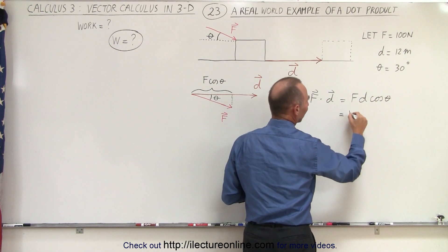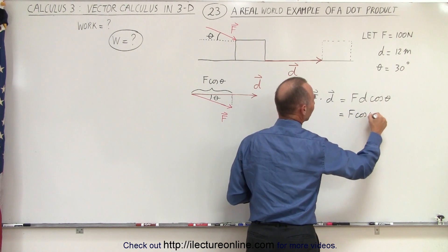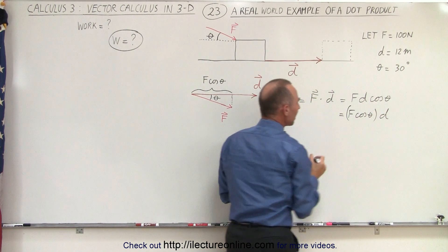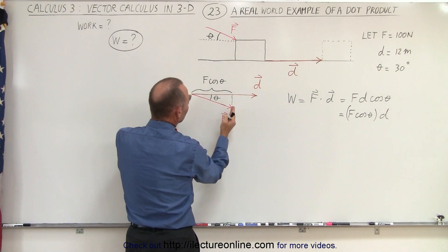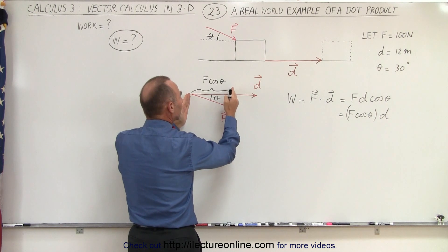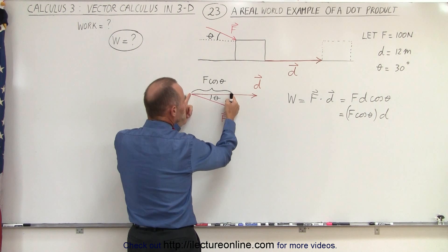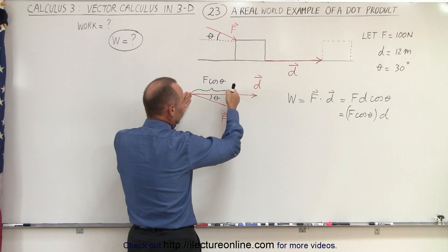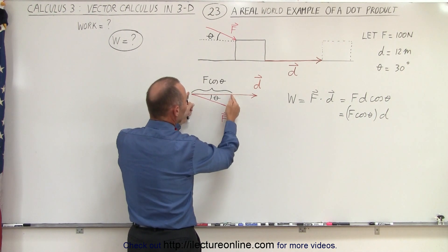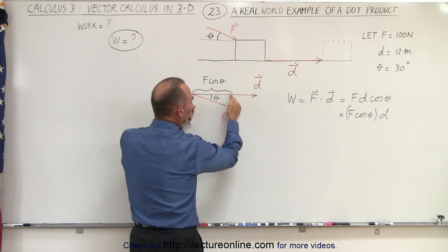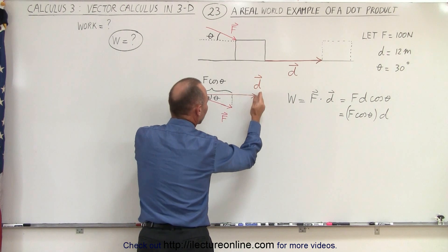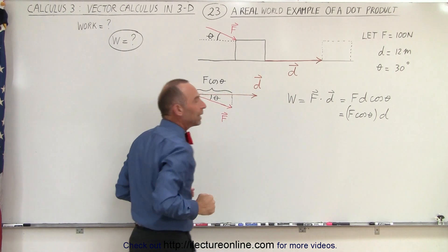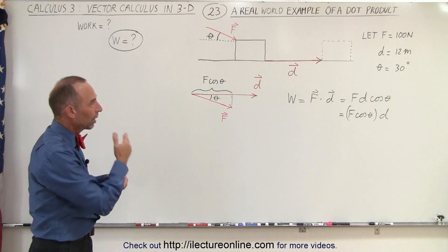If we rewrite this as F times the cosine of theta, multiplied times d, then F·cos(θ) represents the projection of the force vector onto the displacement vector. So it's basically the length of that component of the force vector, and we multiply that magnitude of that component times the magnitude of the displacement to get the work done.